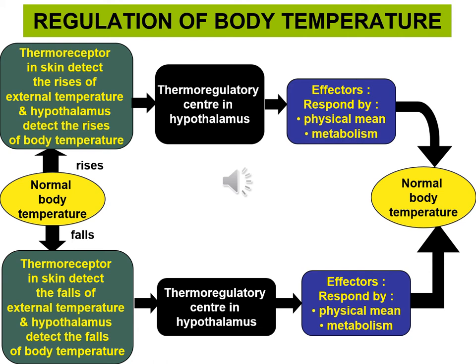The hypothalamus contains both thermoreceptors and the thermoregulatory center. The thermoregulatory center interprets the information and sends nerve impulses to the effectors. The effectors respond by physical and metabolic means. After the effectors carry out the corrective mechanism, body temperature returns to normal.